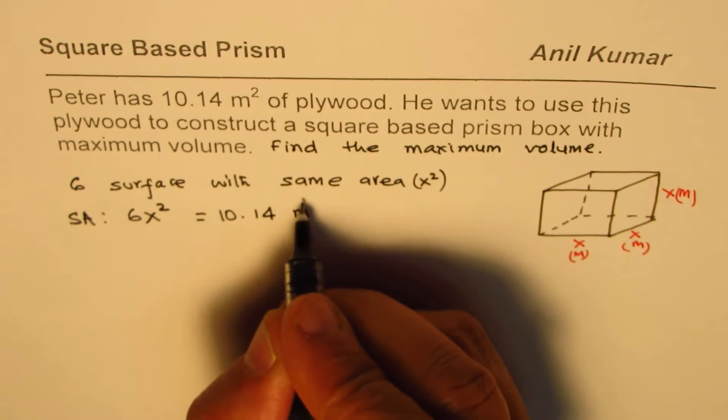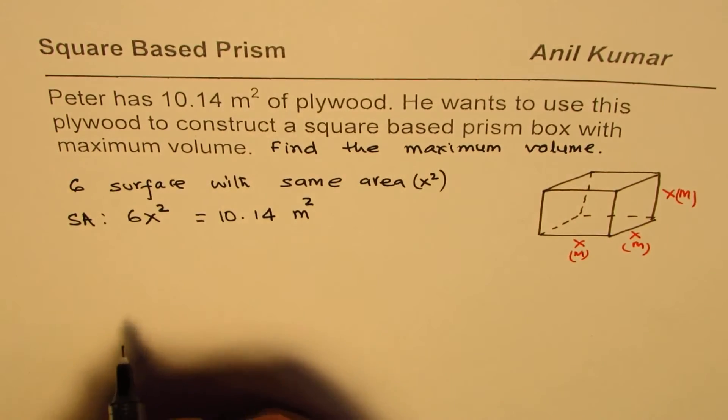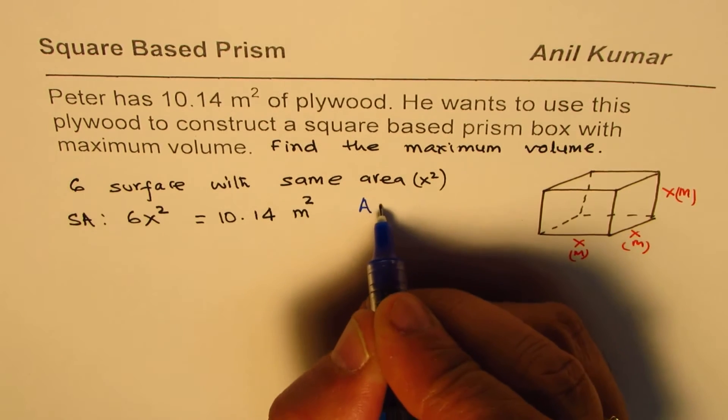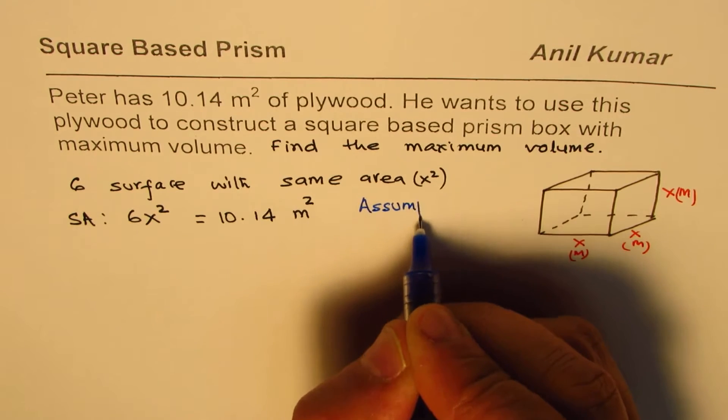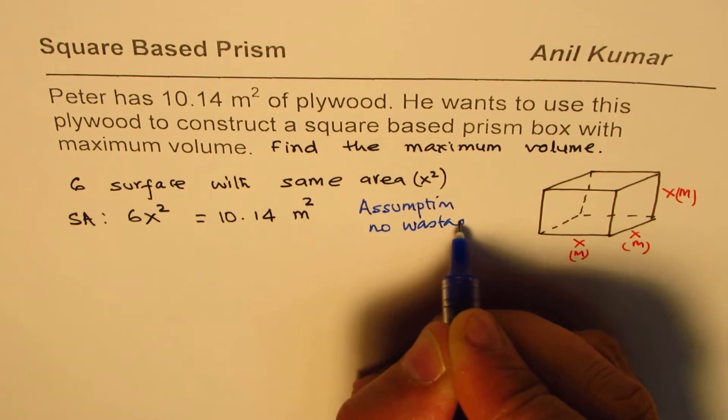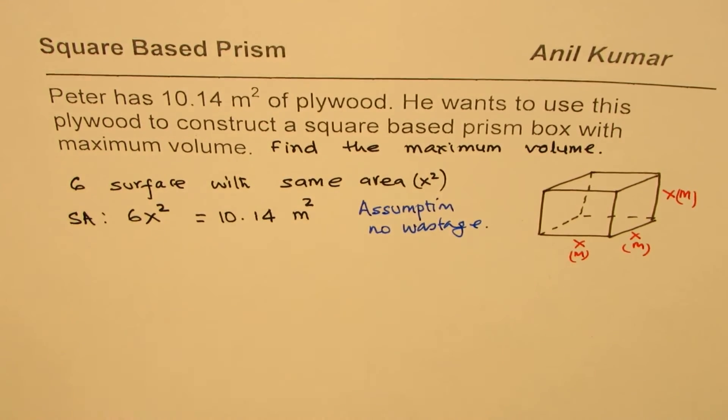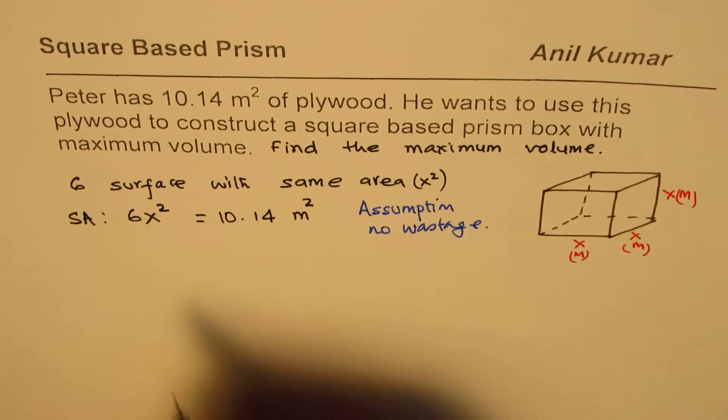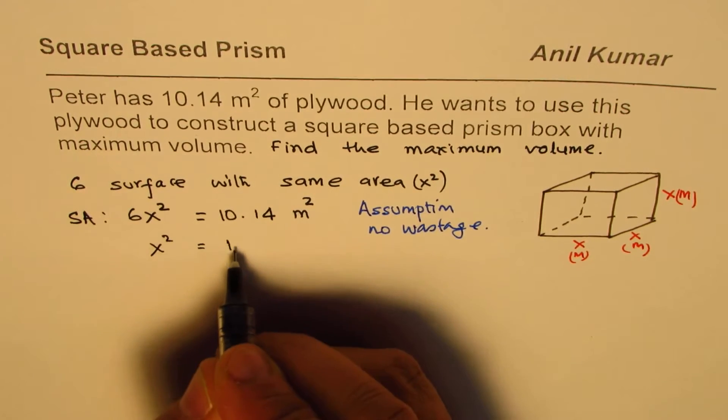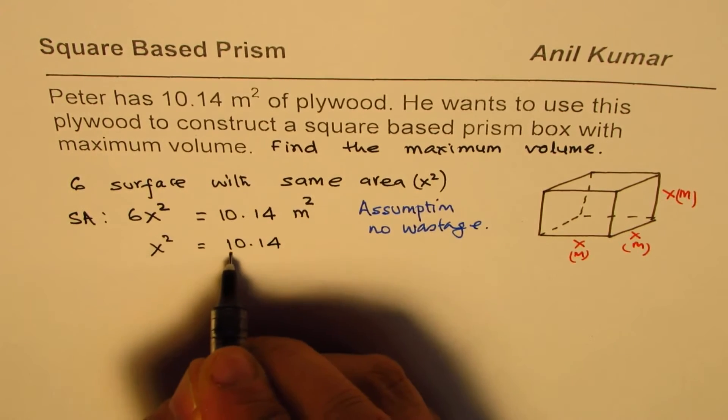At this time we are making an assumption of no wastage. From here we can calculate the value of X, so we have X squared equals 10.14 divided by 6.